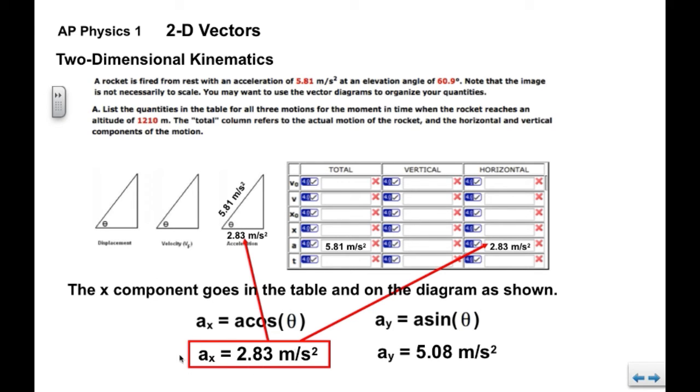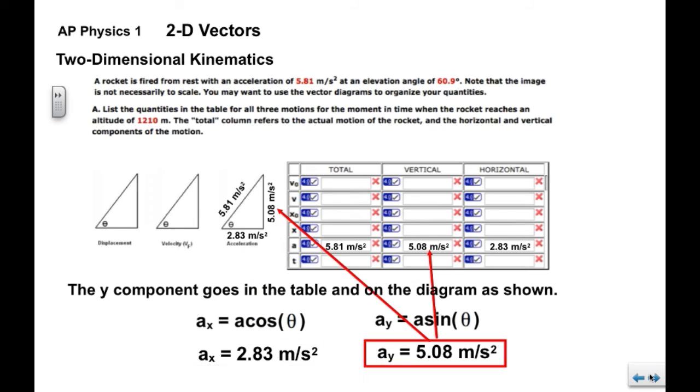Now, this x component, the acceleration goes in two places. First of all, it is the acceleration in the horizontal column of the kinematics table. It is also the horizontal x component of this acceleration diagram. Likewise, the y component goes in the vertical column under acceleration and it also goes in the vertical component of the acceleration diagram.